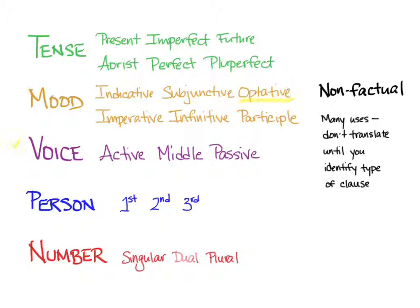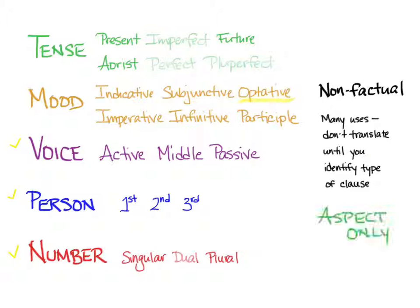Optative verbs come in all three voices, but today you're just doing the active, all three persons, and all numbers. It doesn't have imperfect, pluperfect, or perfect tenses, so we'll only be learning present and aorist tenses right now. We'll also use the future optative later when we need it. With the optative, just as with the subjunctive, tense is about aspect, not about time.